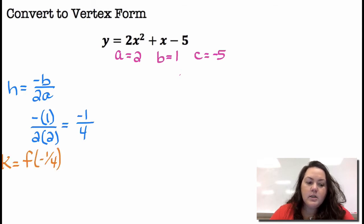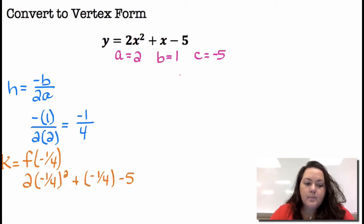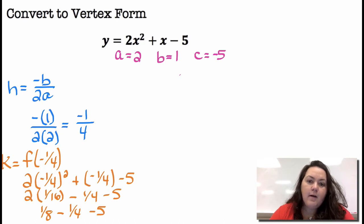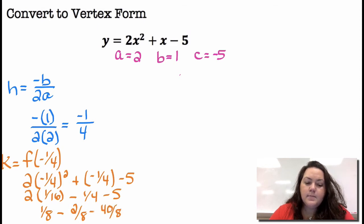I'm going to plug that into my equation to find the K part. So it's 2 times negative one-fourth squared plus negative one-fourth minus 5. Negative one-fourth squared gives me one-sixteenth. Multiply that by 2, I get one-eighth — really 2 sixteenths, which simplifies to 1 over 8. Then minus one-fourth minus 5. With a common denominator of 8: one-fourth becomes 2 eighths, and 5 becomes 40 eighths. Subtracting, I get negative 41 eighths.